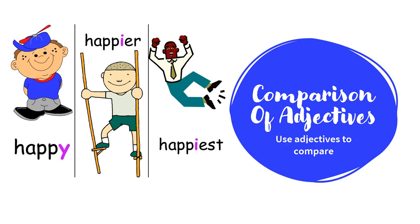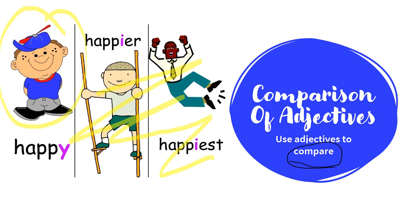It is basically using adjectives to compare. For example, if you can see my screen, I have written happy, happier and happiest. If I hide both of them and I am only looking at this one person, then I can use the simple form saying happy.